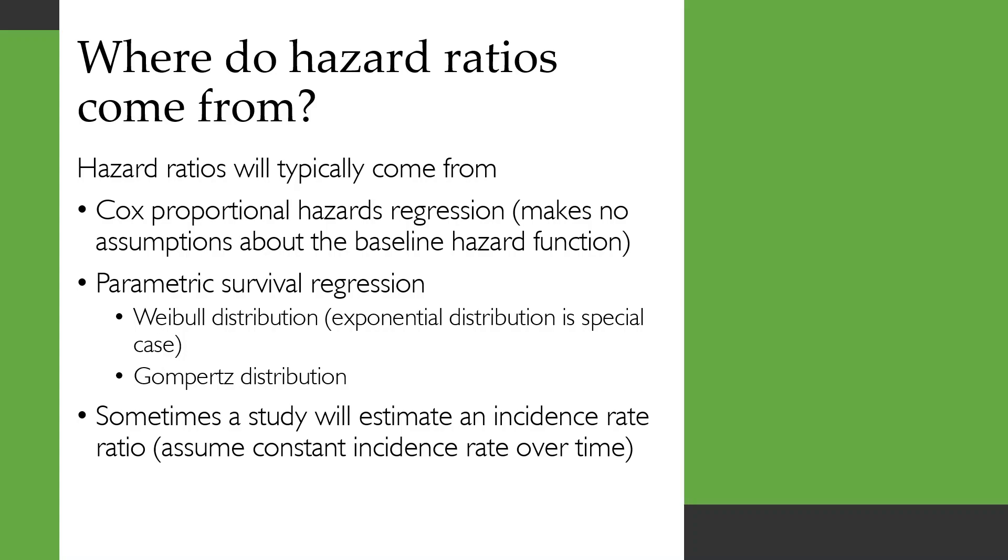You sometimes also get hazard ratios from non-parametric regressions which are using splines, but in the literature you'll generally see them coming from Cox proportional hazards regression. Sometimes you'll also get a study where they estimate incidence rates in different arms and then calculate an incidence rate ratio. Now if you assumed there was a constant incidence rate over time, that would also be the hazard ratio.